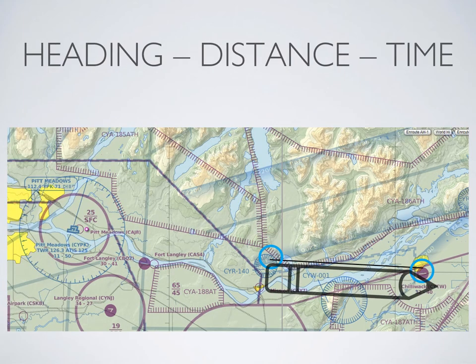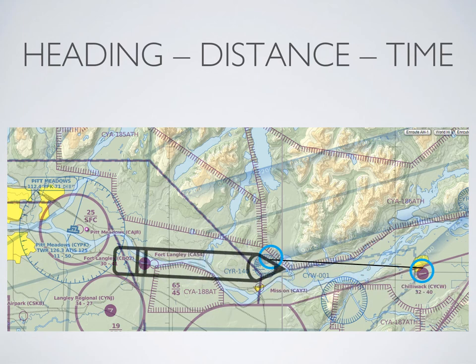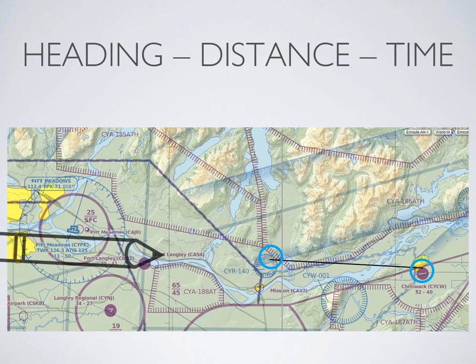Next, we want to obtain the heading, distance, and time. For heading, you can grab a pencil and line it up with your intended track, then carefully line it up with a compass rose. The compass rose shows radials in magnetic, so no conversion from true to magnetic is required. Simply read the heading off the compass rose.